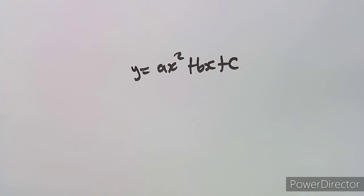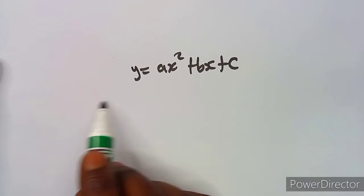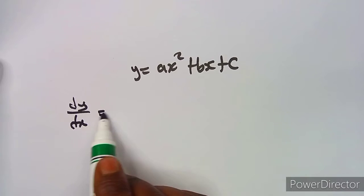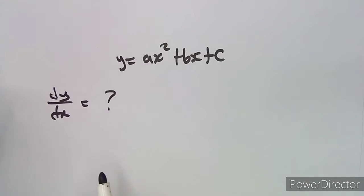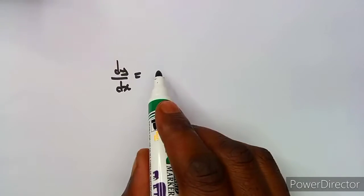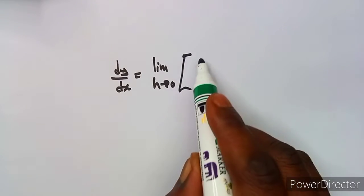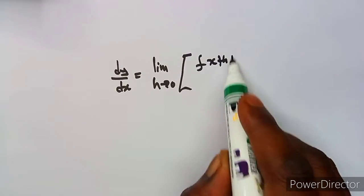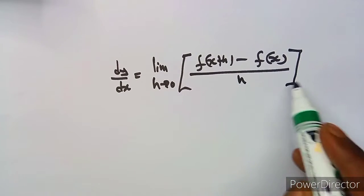We are given y is equal to ax² plus bx plus c, and they have allocated five marks for that. Remember that when applying first principles, you need to find the derivative of y with respect to x. The formula for dy/dx is the limit as H approaches zero of F(x+H) minus F(x), all over H.